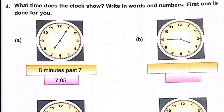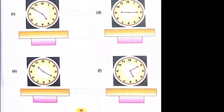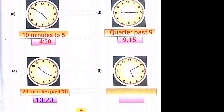Ten minutes to five is 4:50. Nine fifteen is quarter past nine — that is 9:15. Twenty minutes past ten is 10:20. Ten minutes past five is 5:10.